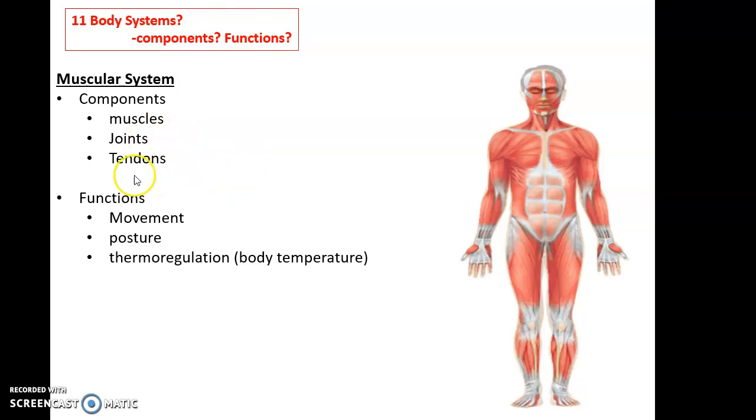Functions of the muscular system include movement, allowing us to move our body; posture, so we can uphold that upright position, even without thinking about it; and thermoregulation, or body temperature. The contractions of these skeletal muscles generate heat to help maintain our body temperature.